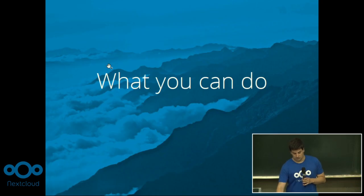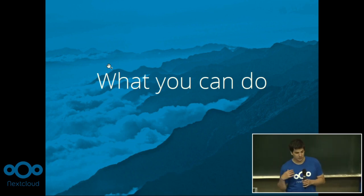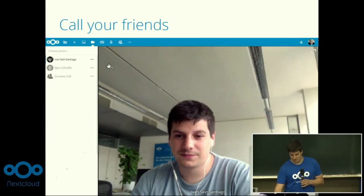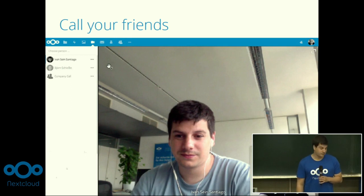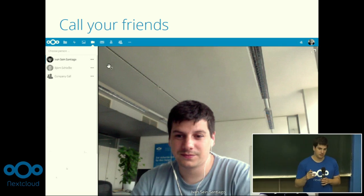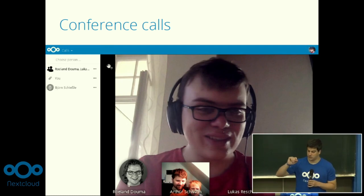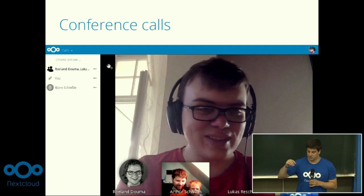Right now I'm going to explain what you can do with this app — though in the keynote we already saw much of what I'm going to explain. First of all, you can call your friends. You can select any of your contacts in NextCloud, just click on it, and you will automatically create a call with that contact. That user will be notified and just has to open the app, and you can start talking. Also, if you want to add more people to the call, you just select more contacts from your NextCloud and they will be added, giving you a conference or group call.